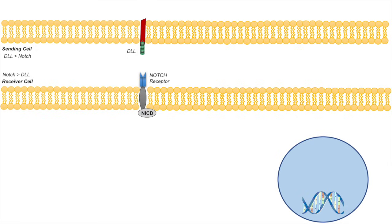In order for the notch signaling pathway to become activated, the delta-like ligand or DLL has to bind to the extracellular domain of the notch receptor. The first thing that has to happen is that the DLL has to become activated, and it's activated by a protein within the sending cell known as MindBomb.